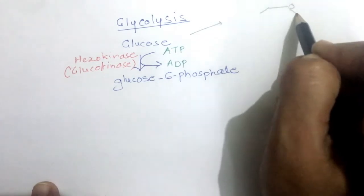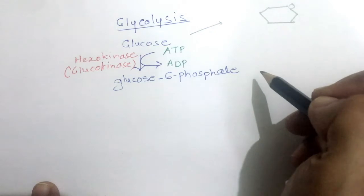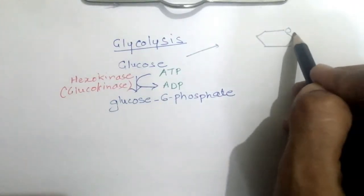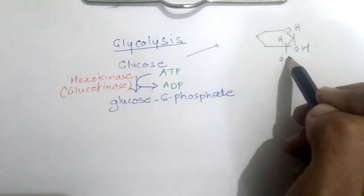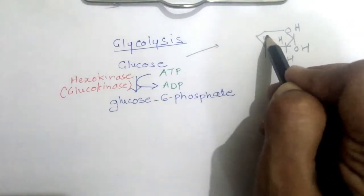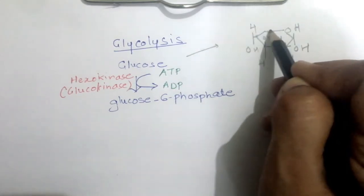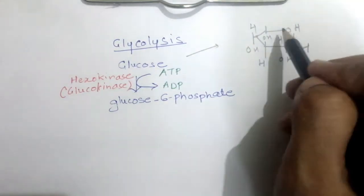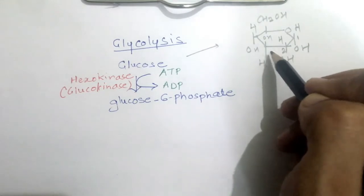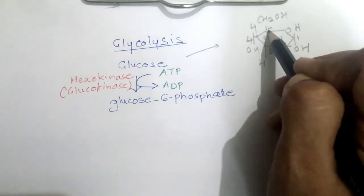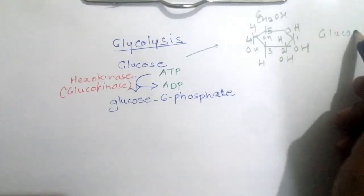Let us study the structure of glucose. There are 6 carbons in glucose. We are drawing the cyclical structure of glucose here. In the ring there are 5 carbons, and the 6th carbon is outside: 1, 2, 3, 4, 5, and the 6th one is CH₂OH. This is the cyclical structure of glucose.